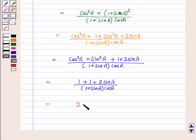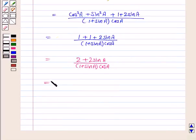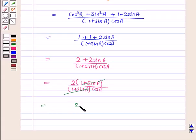So this is equal to 2 plus 2 sin A. Now this is equal to 2 into 1 plus sin A upon 1 plus sin A into cos A. Taking 2 common, 1 plus sin A gets cancelled with 1 plus sin A and we have 2 upon cos A.